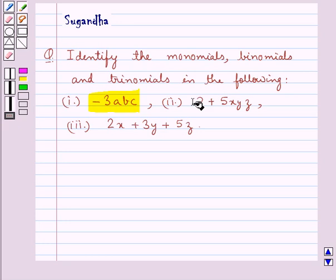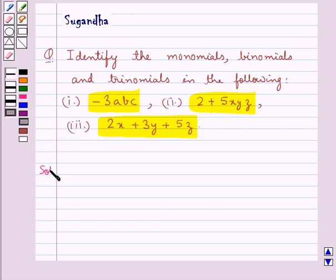Minus 3abc, 2 plus 5xyz, 2x plus 3y plus 5z. Let's see the solution.